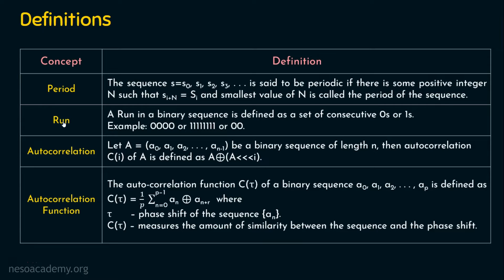Coming to the second definition: the run. A run in a binary sequence is defined as a set of consecutive zeros or ones. For example, starting with zero and continuing — if the next bit is one, then up to that point is a run. Similarly, continuous ones up to a zero form another run. Everything before the next different bit is said to be a run. When we see an example, it will be easy to understand.